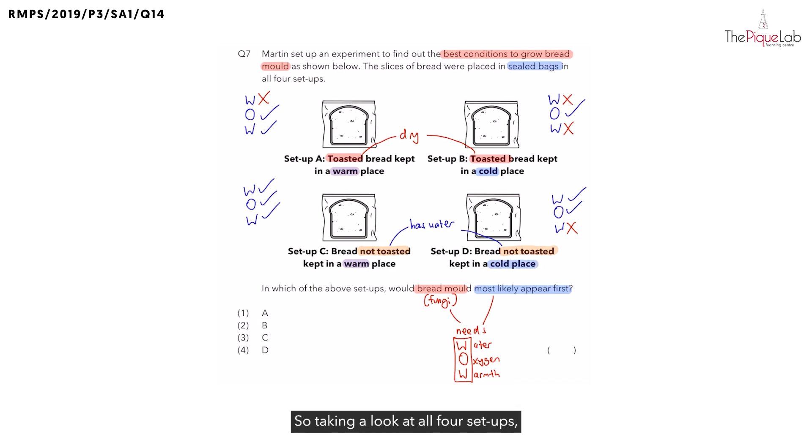So taking a look at all four setups, which is the one that has all three conditions present? We can see it is setup C. So what should be the answer for where bread mold will most likely appear first? It must be setup C. Therefore, the correct answer must be number 3.